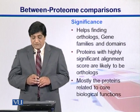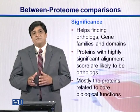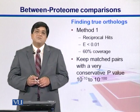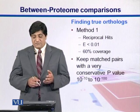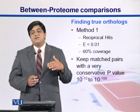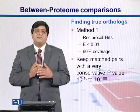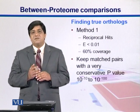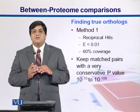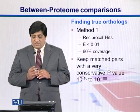Proteins with highly significant alignment scores are suspected as orthologs. Mostly, proteins related to core biological functions — the basic functions of life — are orthologs. To find true orthologs, there is a technique called reciprocal hits. In reciprocal hits, you take one organism at a time as a query and search against the other as a database, then flip around — take the first as database and the second as query. If you get similar end results, the same genes correlate with one another, and you keep them as best hits.